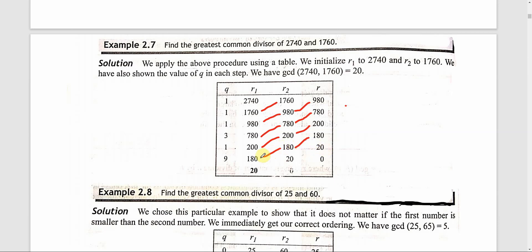The remainder is 200 minus 180, which gives 20. Values are exchanged: R1 = 20 and R2 = 20. Then R1 divided by R2 gives quotient 9 and remainder 0. Values are exchanged: 20 is moved to R1 and 0 is moved to R2. The required result is in R1. So GCD of 2740 and 1760 is equal to 20.